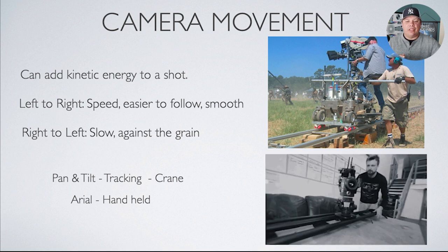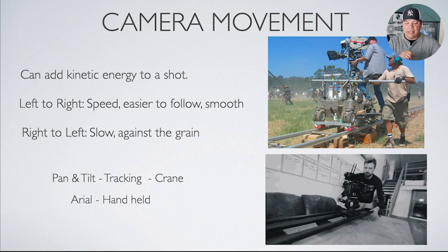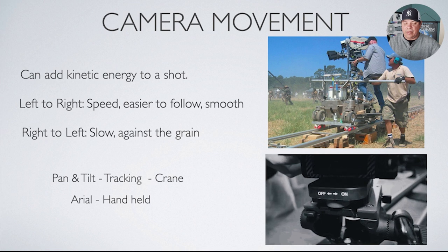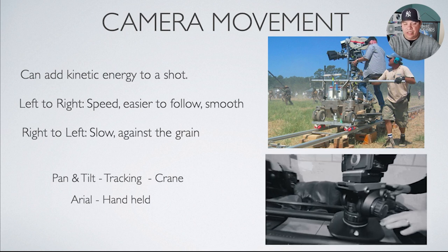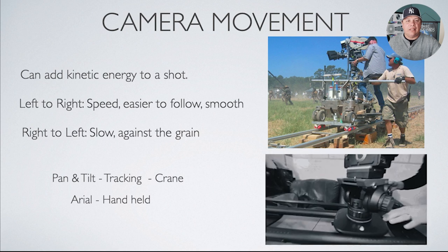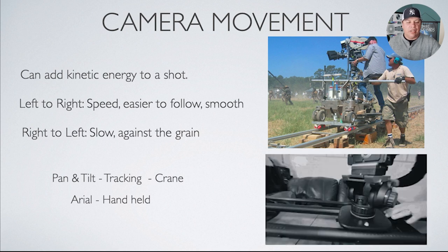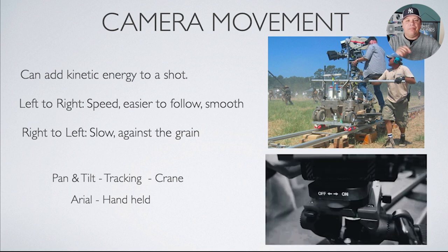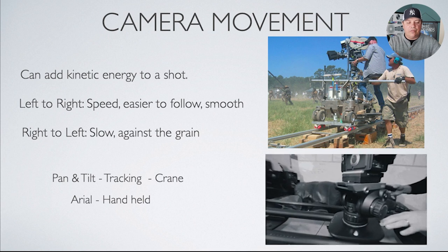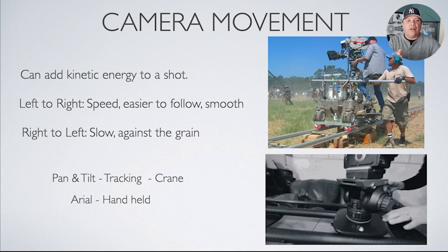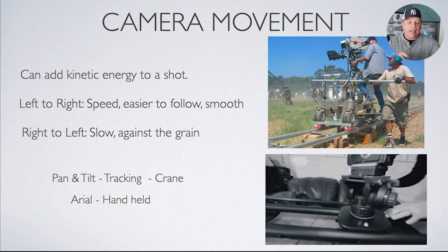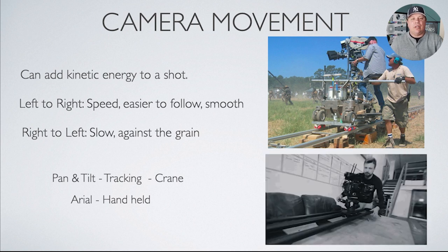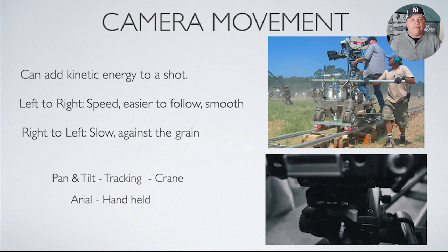Gimbals can help you, but it's also good to know how to use traditional equipment. The bottom image shows a slider, which works on a smaller style camera, and traditionally in Hollywood they're still using dollies like the one in the top picture — that's the traditional dolly used on most motion pictures. Movement adds energy to the shot. Left-to-right movement has speed, it's easier to follow and seems smoother to the audience, while right-to-left movement seems slower and against the grain.